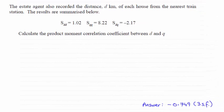Hi there. For this question, we were asked to work out the product moment correlation coefficient between D and Q, given these summary statistics. And it turns out that the answer is minus 0.749 to three significant figures.